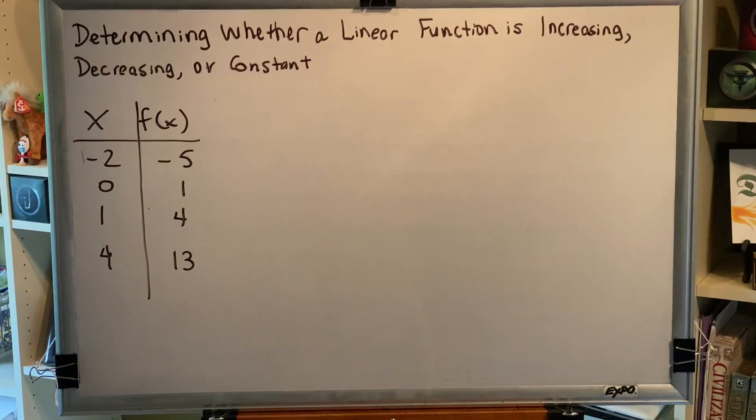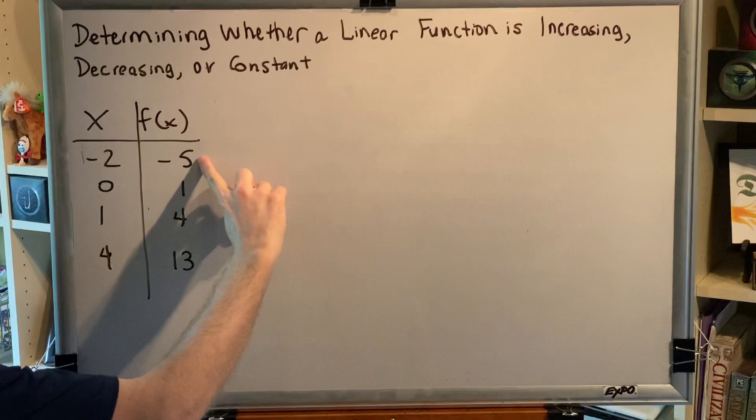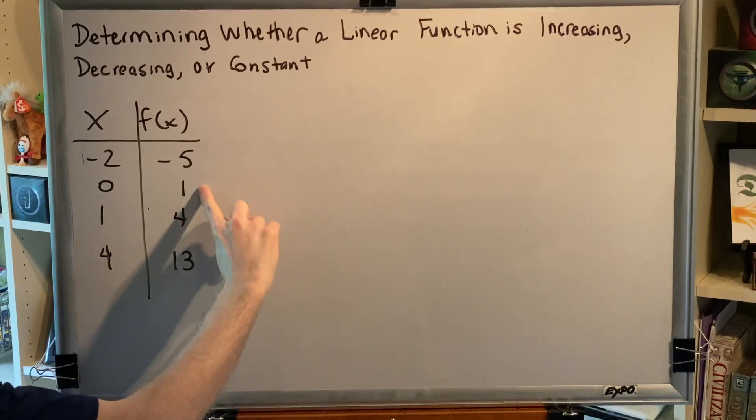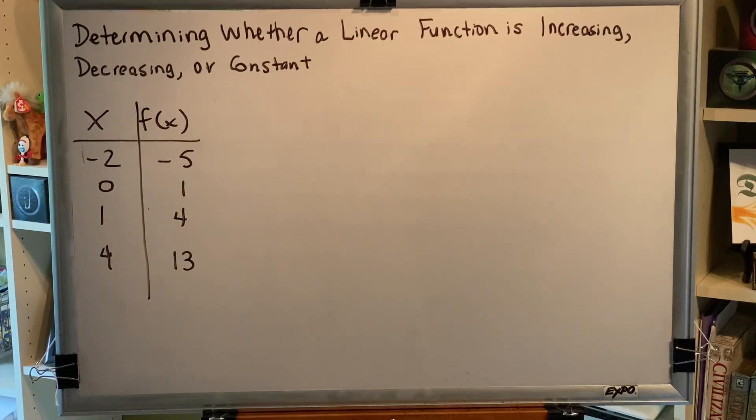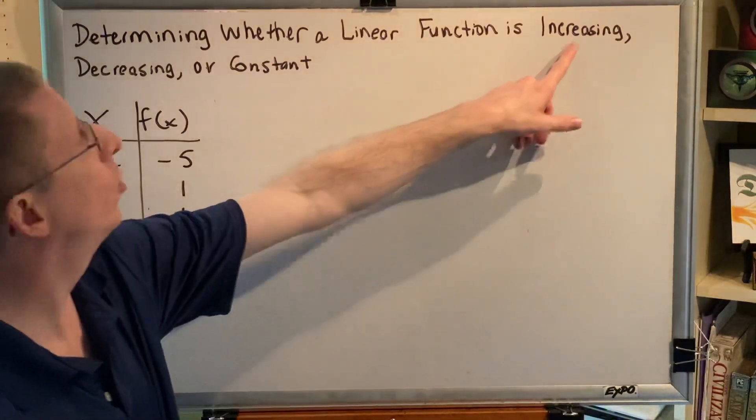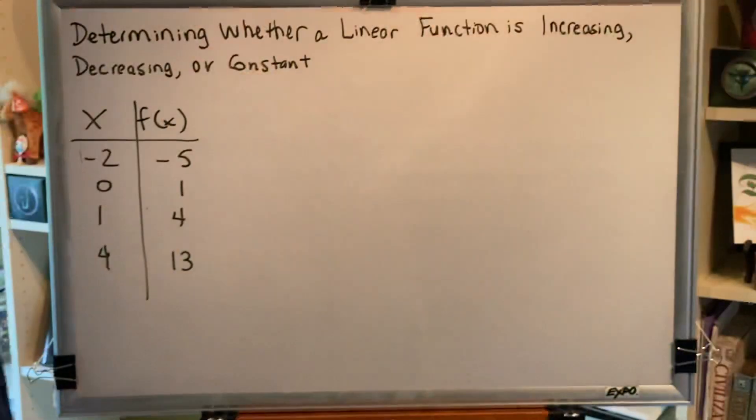So now to determine if it's increasing, decreasing, or constant, all we have to do is look at the y values. We've got negative 5, and then it increases to 1, increases to 4, increases to 13. So the y values are going up, and based on that observation, we can conclude that this linear function is increasing.